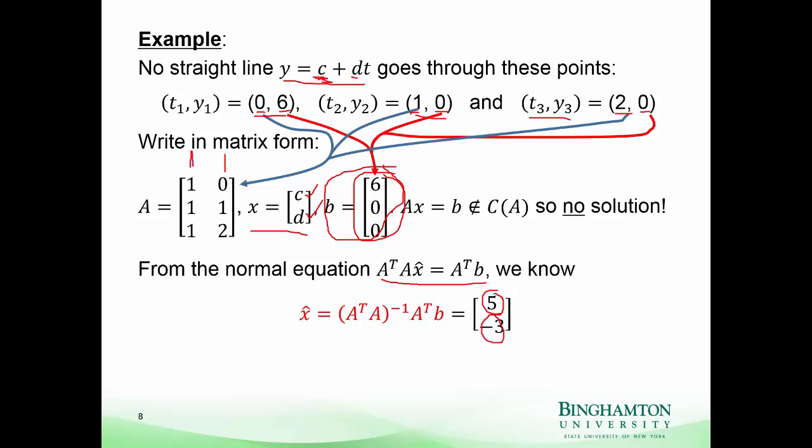There's our solution: 5 and negative 3. So 5 is the intercept and negative 3 is the slope. We would say our model is Y = 5 − 3T. Scientists do this all the time — they take some observations, get a linear model, and use it to extrapolate. They use that to predict what would happen in scenarios not yet observed, making it a predictive model.